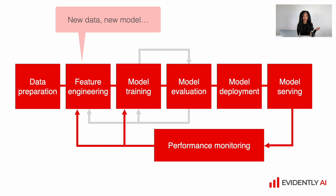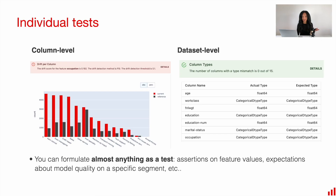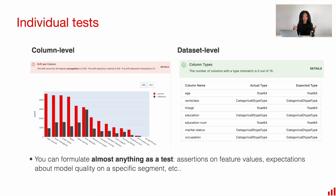Let's see what types of checks this can be and how to perform testing. Basically, tests are metrics which we calculate on top of our data with certain conditions. Such tests can be at a column level, related to a specific feature, or at a dataset level, where you calculate a metric related to the whole dataset. You can formulate almost anything as a test — assertions of feature values, expectations about model quality, or checks on a specific segment. Whatever you can measure, you can design as a test.